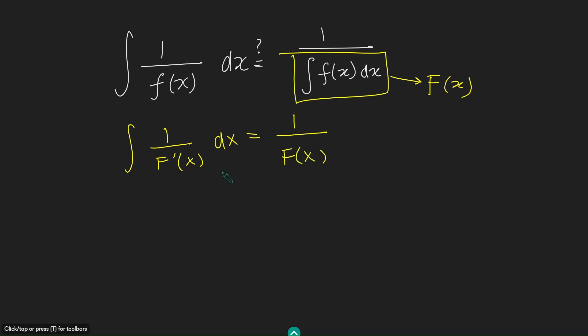Differentiating both sides with respect to x, on this side I just get one over f prime of x. And on this side, just using the chain rule, I get minus f prime of x all over f of x squared.